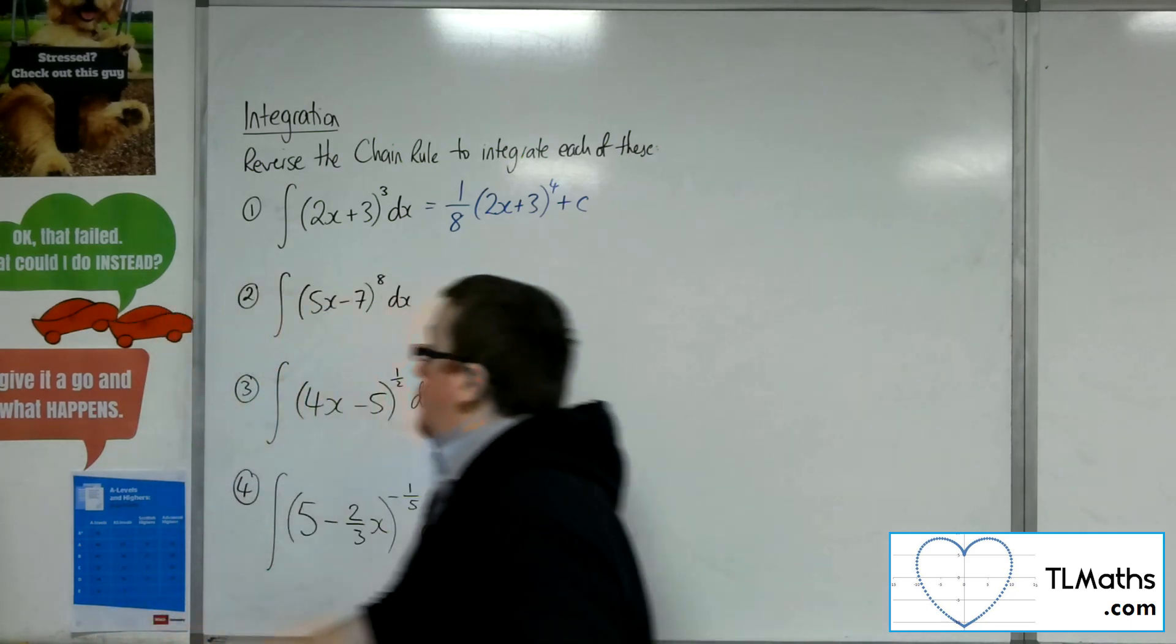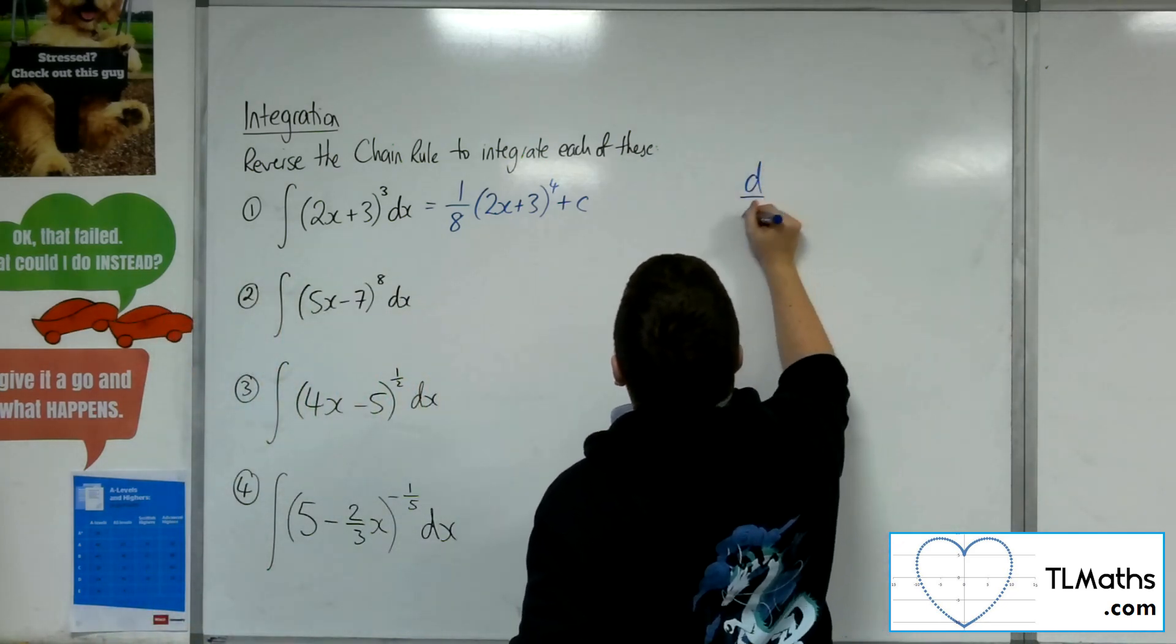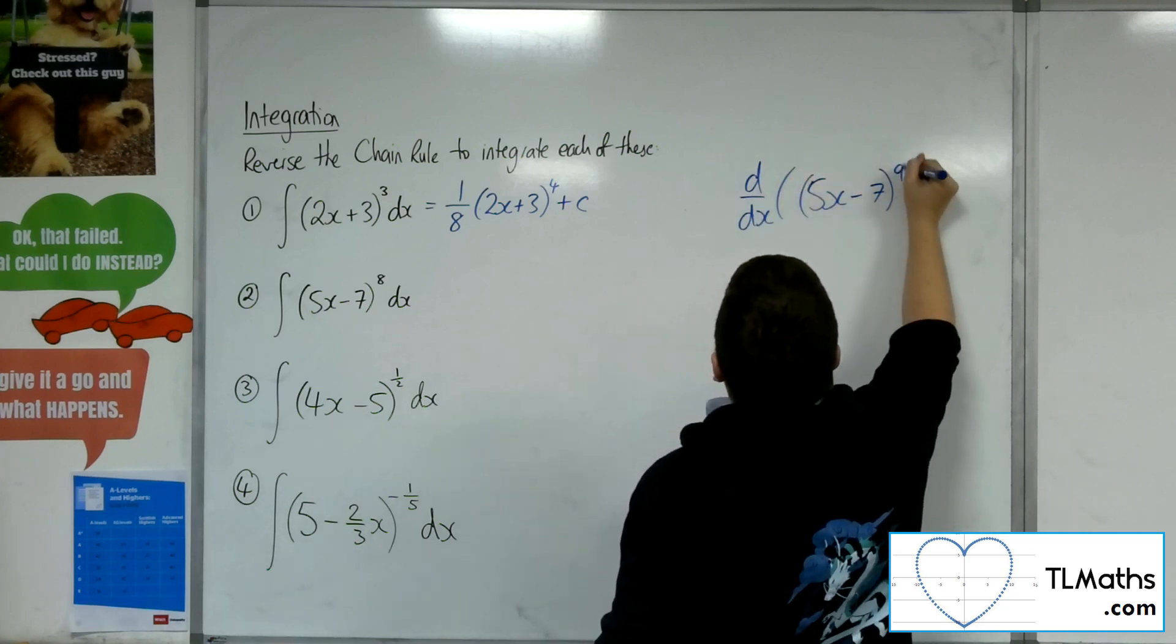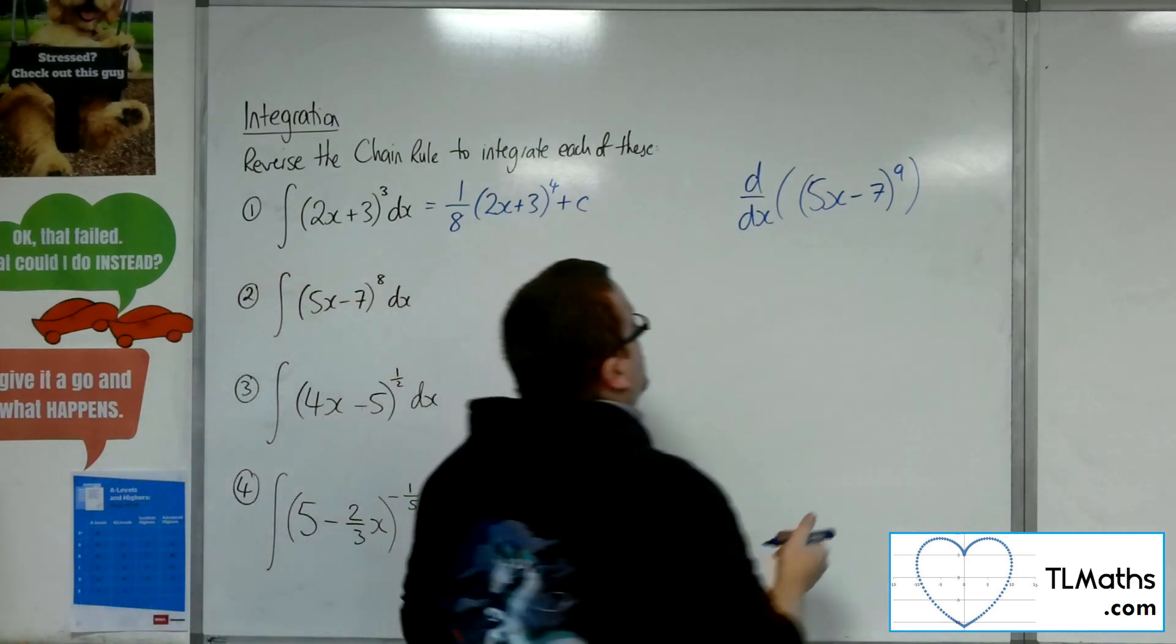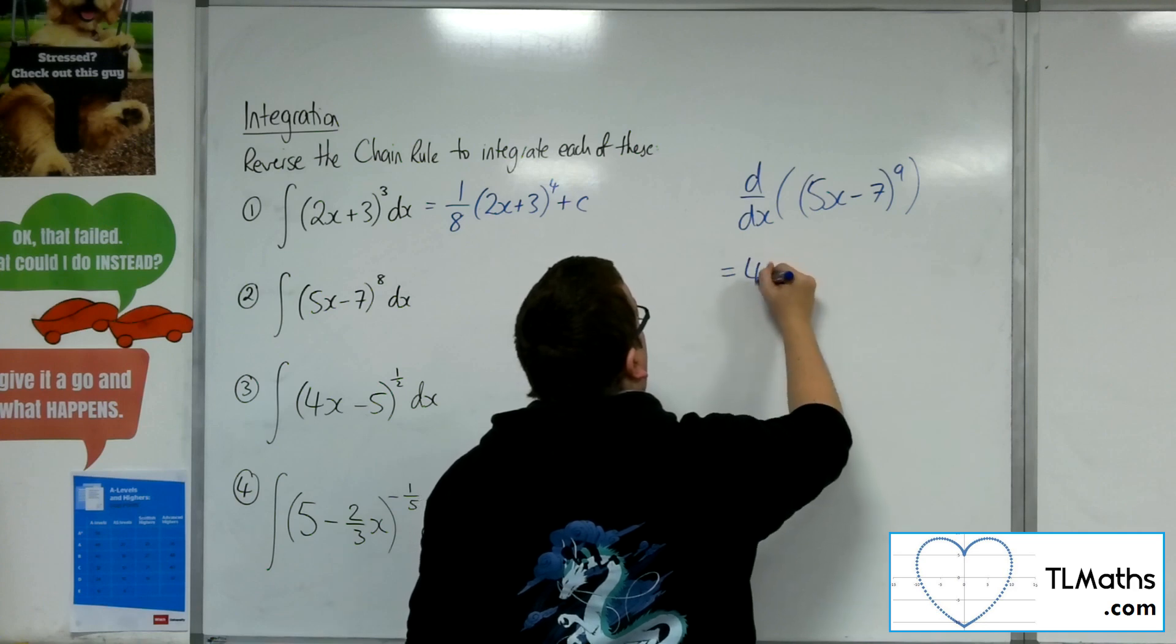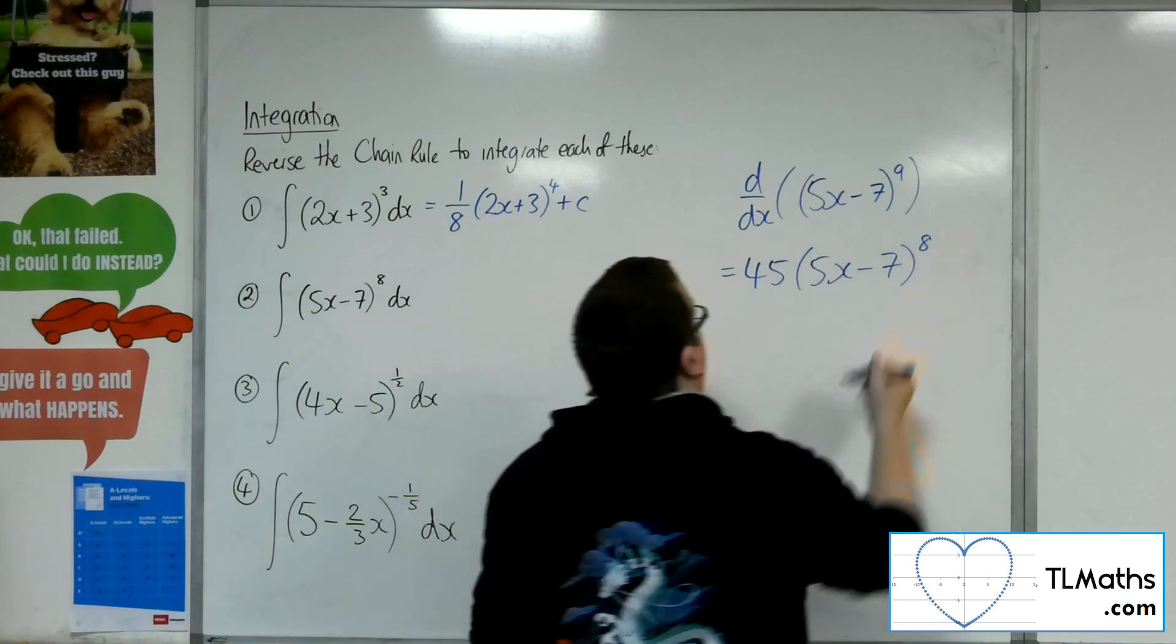So number 2, 5x minus 7 to the 8. I know that it should get to 5x minus 7 to the 9. So if I differentiate that, the 9 and the 5 will come down to the front, so I'll get 45 lots of 5x minus 7 to the 8 using the chain rule.